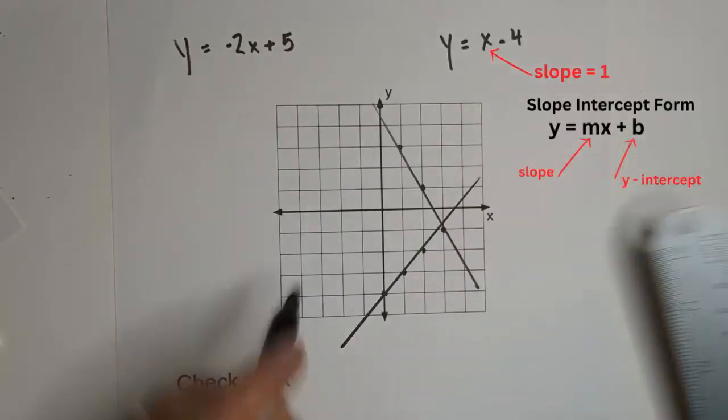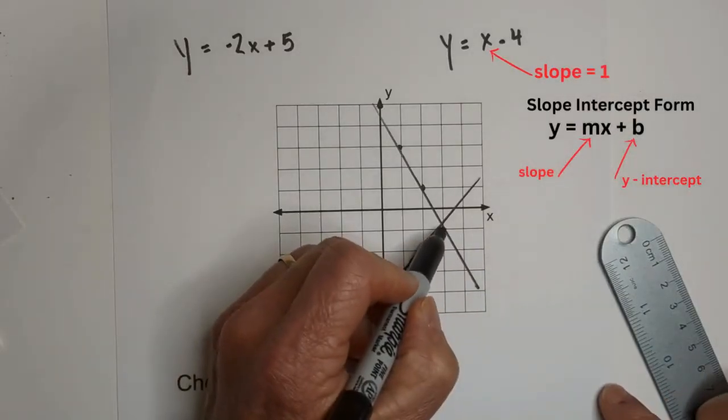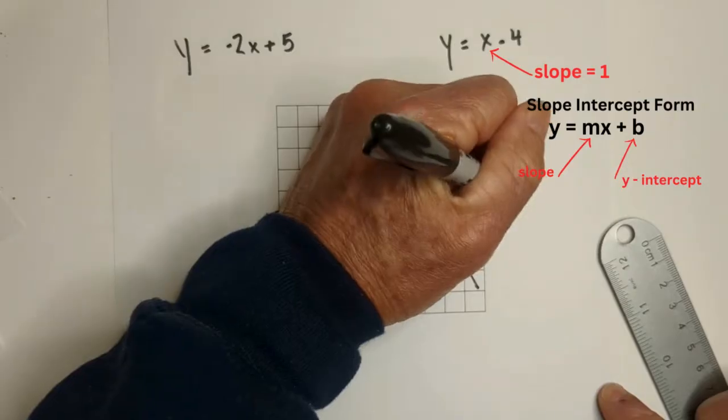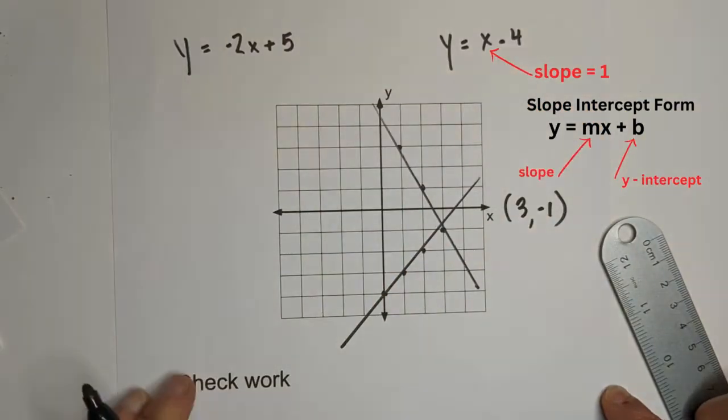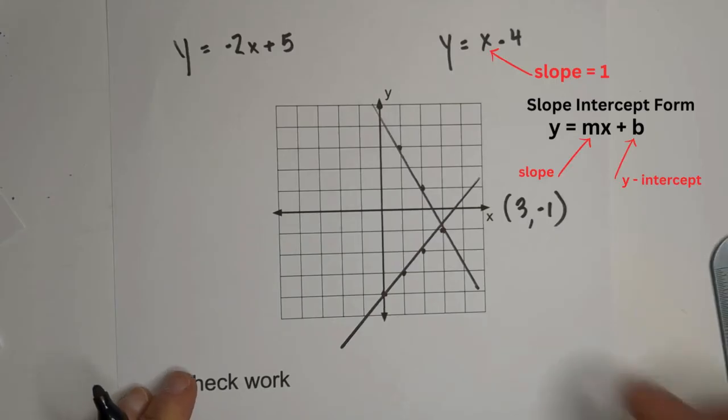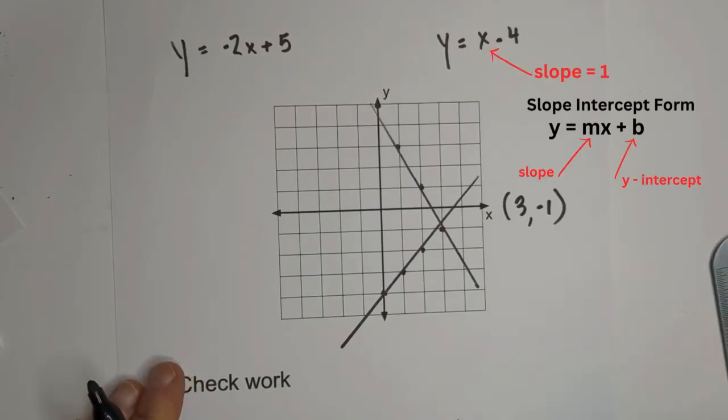Let's draw a line. And it looks like it intercepts right here at this point, which is 3, negative 1. So now we have what the solution is. So now let's check our work.